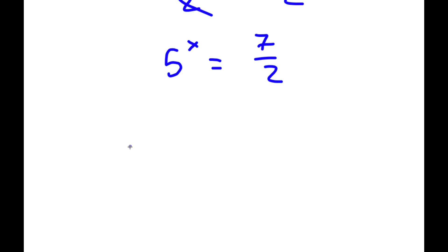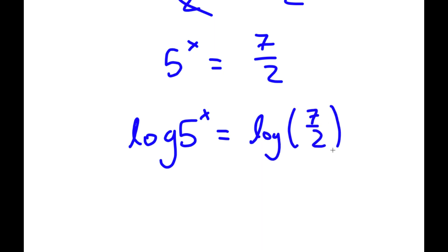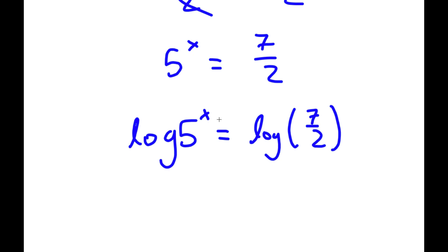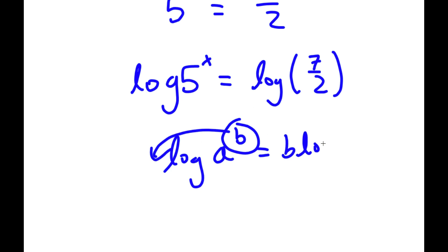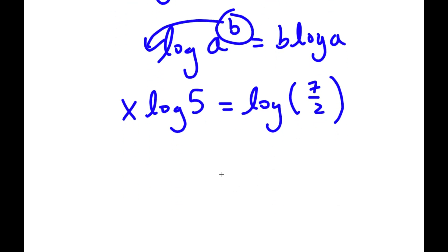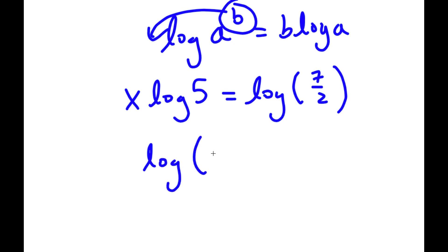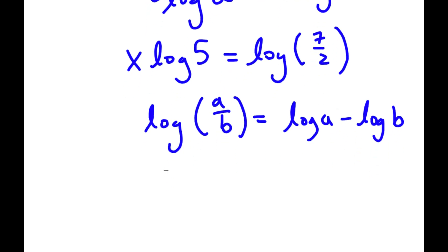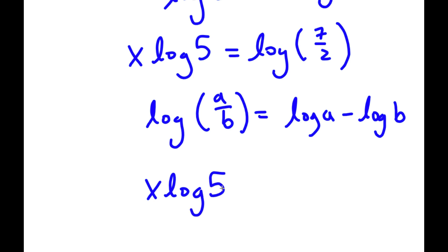Now to solve this, I'm going to take the log on both sides. So I have log 5 to the power of x is equal to log 7 over 2. Since I have log 5 to the power of x, I can move x to the front, getting x times log 5 is equal to log 7 over 2. Now if I have something in the form log a over b, this is equal to log a minus log b. So log 7 over 2 equals log 7 minus log 2.